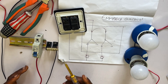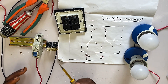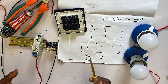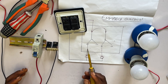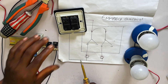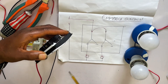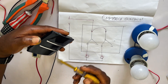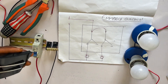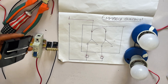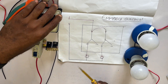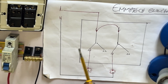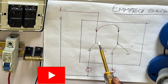Hi everyone. In today's video I'm going to teach you exactly how to connect a two gang switch. A two gang switch is used to control two different light bulbs from one location. Let's begin the connection.